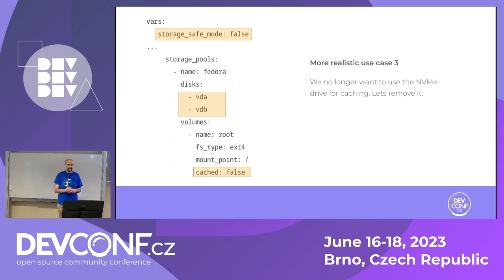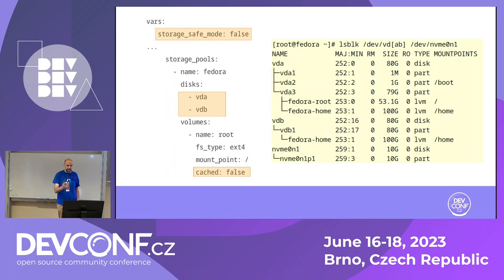So if you want to be safe, just don't disable safe mode. For this case, removing the cache is actually safe, but it's still removing something. So you need to set storage_safe_mode to false. Then if you run the playbook, we will actually remove the cache from the root logical volume and also remove the NVMe from the volume group. This is how it looks afterwards — basically the same as before, with root and home logical volumes and no cache.